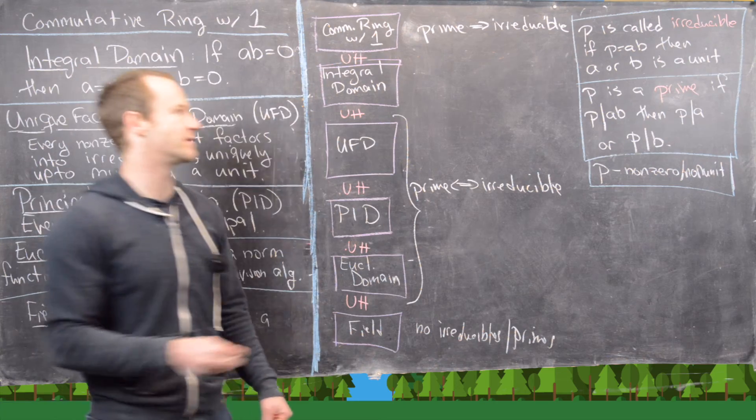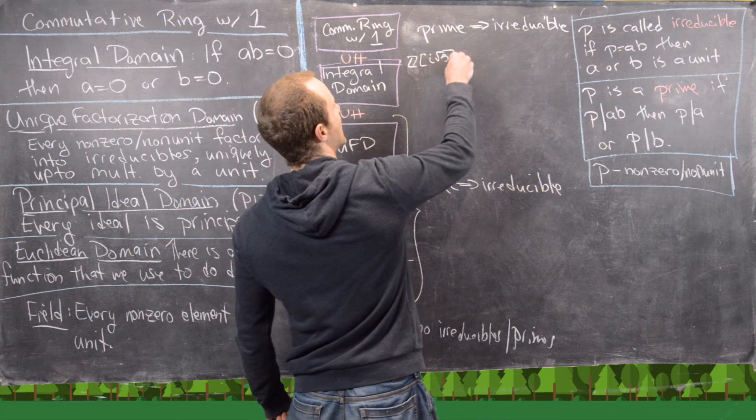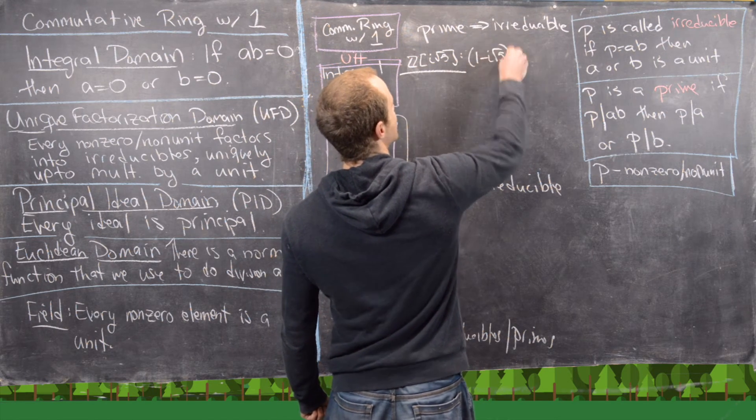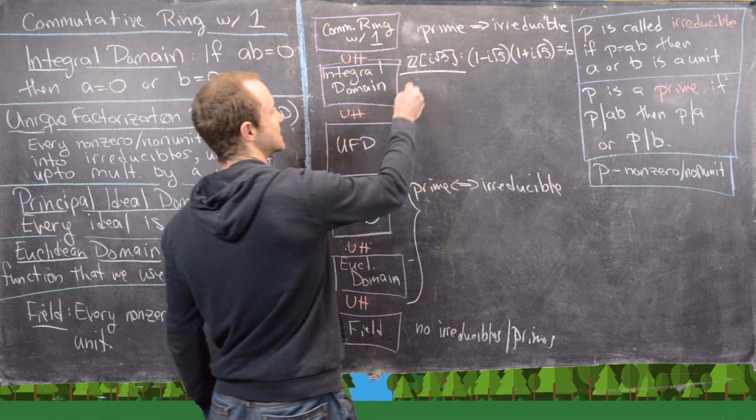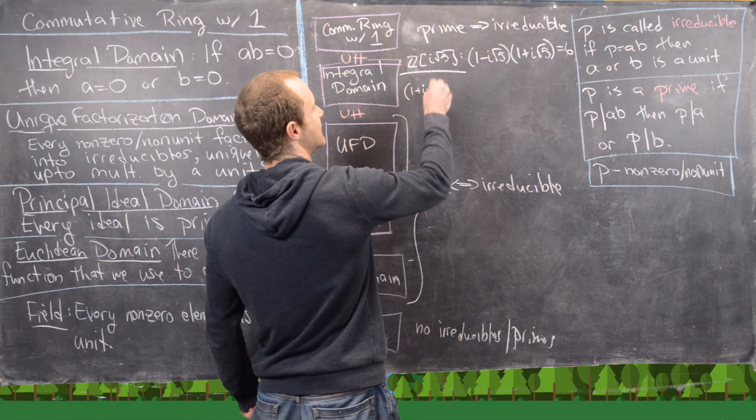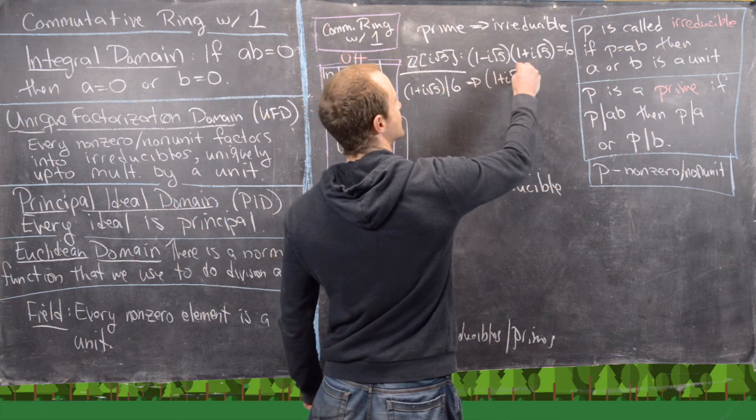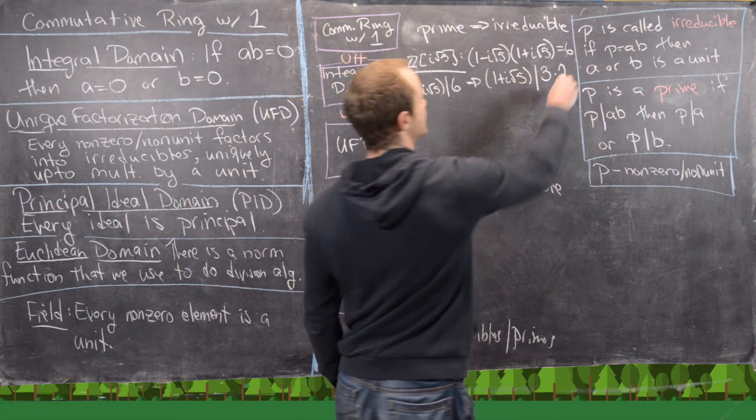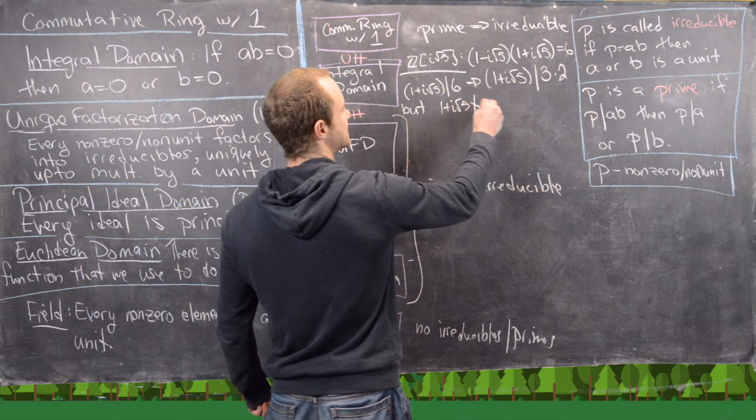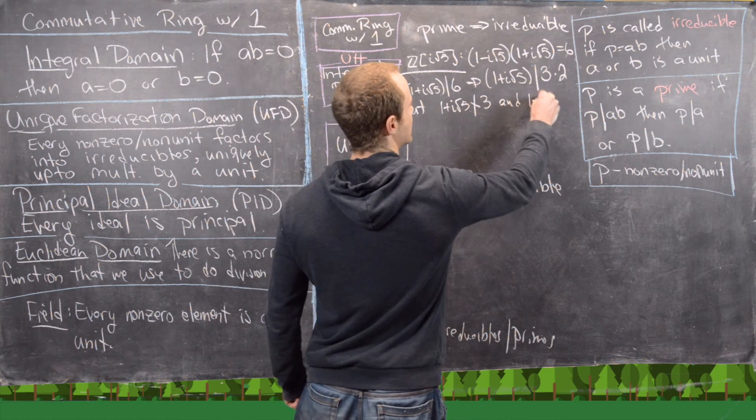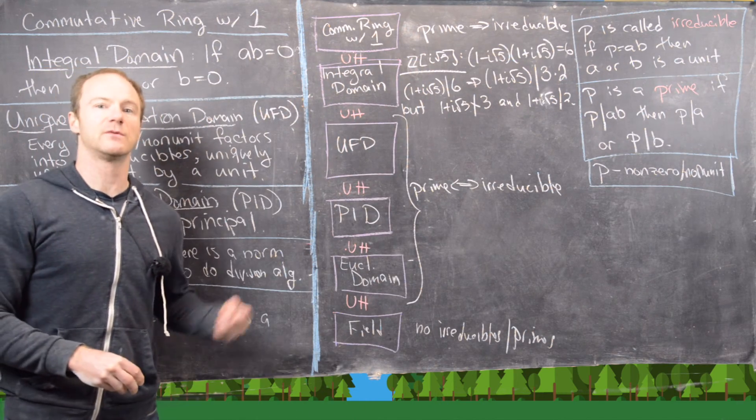So we know that in Z adjoin I the square root of five, we know that (1 minus I root 5) times (1 plus I root 5) equals 6. But that tells us that (1 plus I root 5) divides 6. But that means that (1 plus I root 5) divides 3 times 2. But then you can check that (1 plus I root 5) doesn't divide 3 and (1 plus I root 5) does not divide 2, which makes this thing irreducible but not prime.